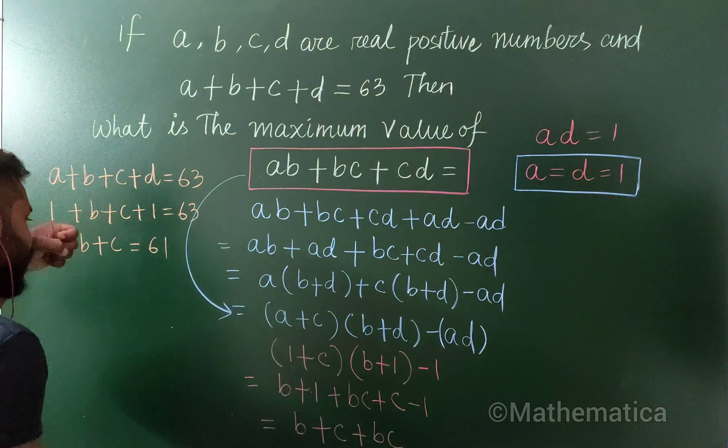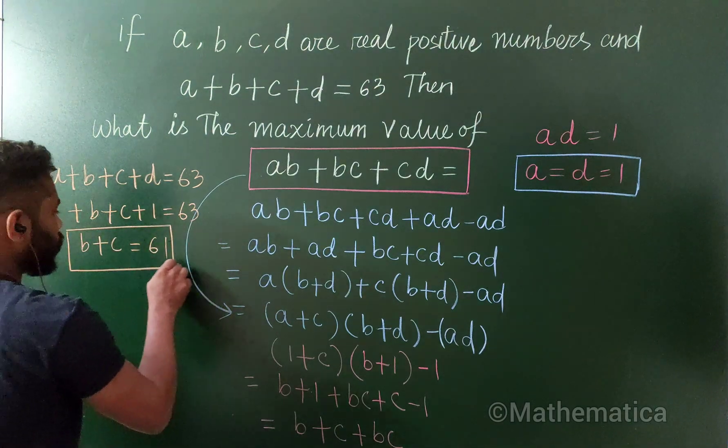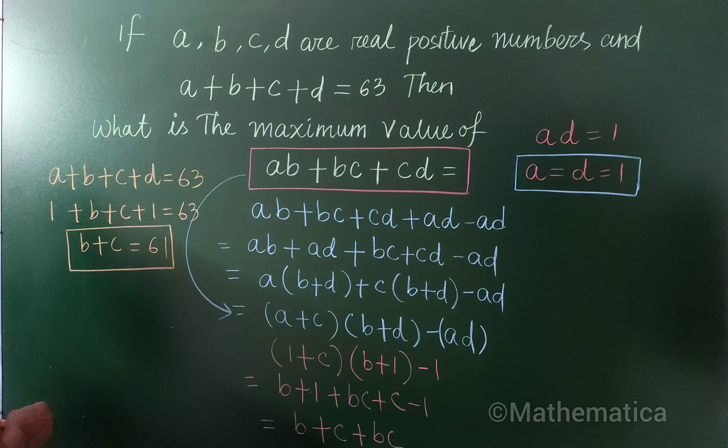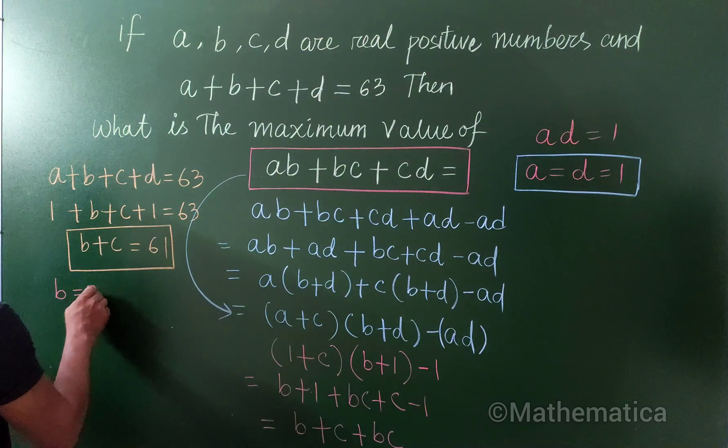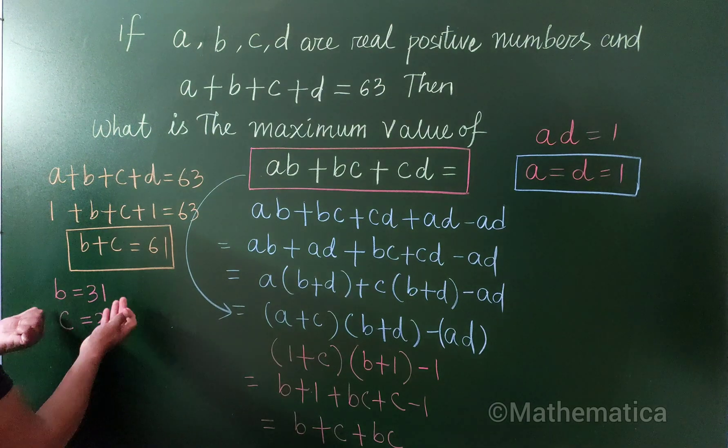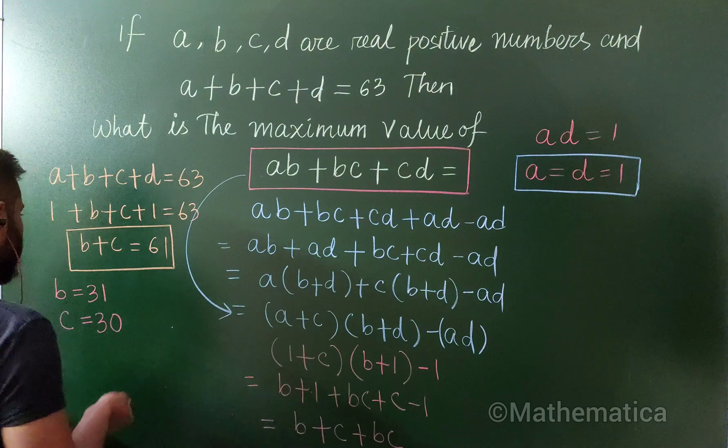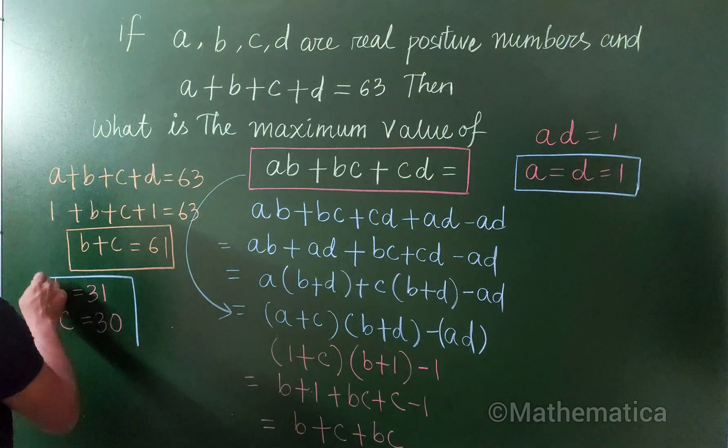Right. So from this information we can say that, because both are positive real numbers and in order to maximize, we can say that b is 31 and c must be 30. Or c is 31 and b is 30. Because of the symmetry, we can take this one. So let's use this one here.